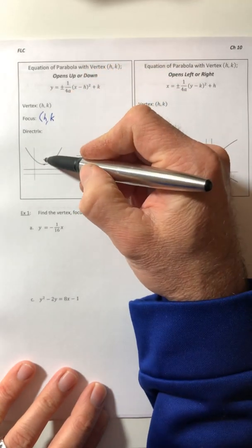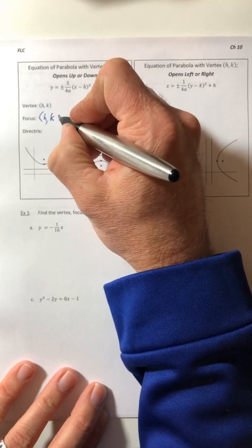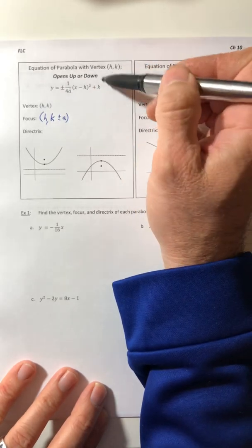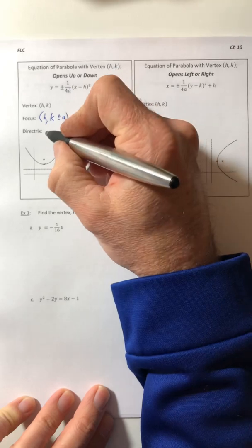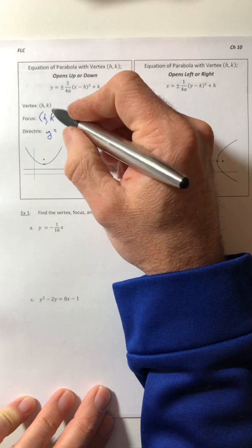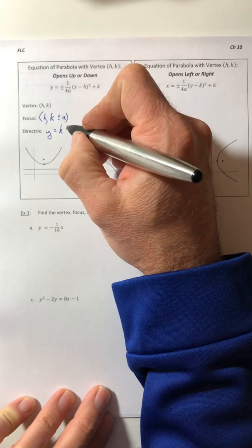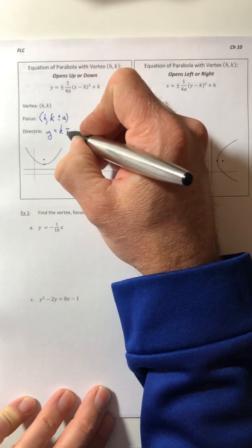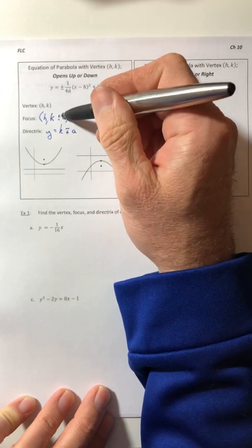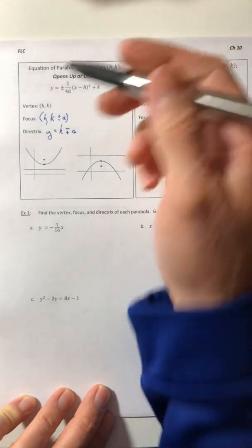And to figure out where the new Y coordinate is, you're going to take that Y value, the K, and you're either going to add or subtract this A value from the equation. And then the directrix, it's a line. So it's going to be Y equals, and you're taking that same Y coordinate, and you're going to do the opposite of what you did from the focus. So you want to write it as K and then minus plus the A. So if you added A to the focus, you're going to subtract the A from the directrix and vice versa.